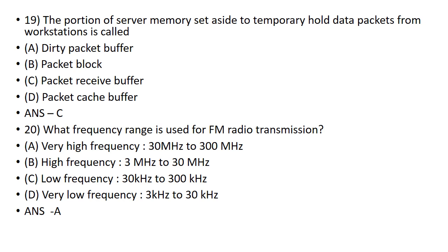What frequency range is used for FM radio transmission? FM radio transmission uses very high frequency, from 30 MHz to 300 MHz.